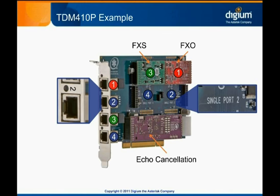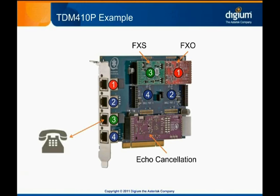With one FXO and one FXS installed, Asterisk can be connected to one analog phone and one analog line. That doesn't mean that the system is only capable of a single call. With this card installed, the ports become additional resources available to Asterisk, along with any other resources already installed.